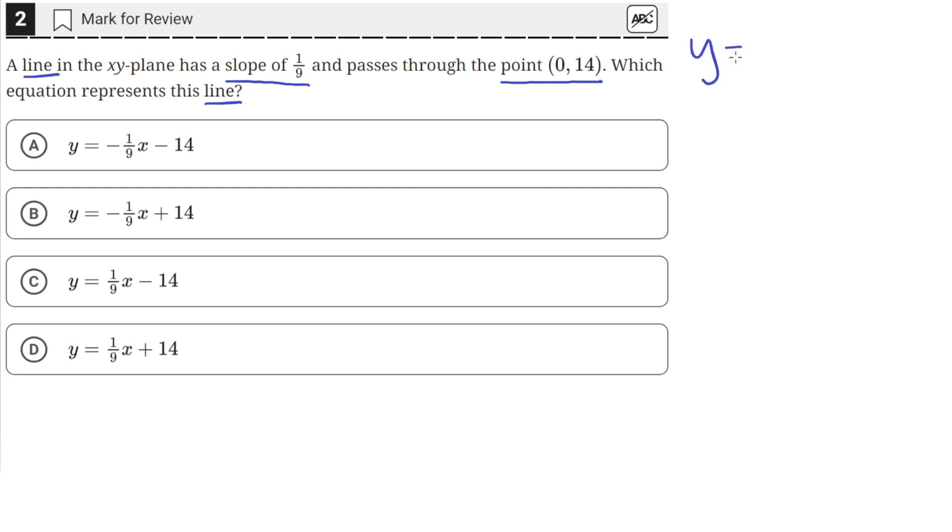The equation of a line is of the form y equals mx plus b, where y is the coordinate on the y-axis, x is the coordinate on the x-axis, m is the slope, and b is the y-intercept.